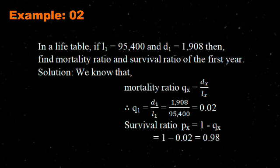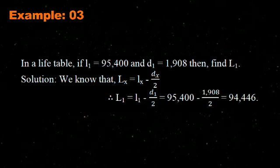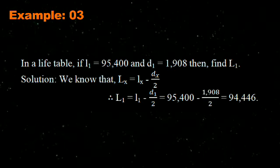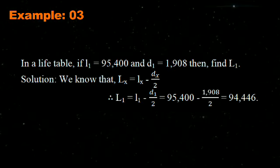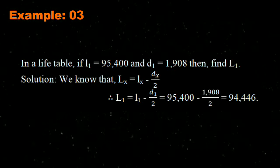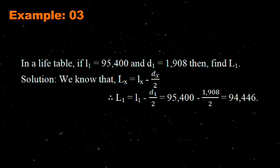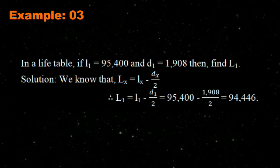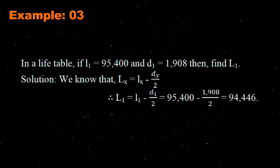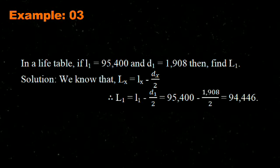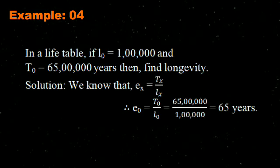Example 3: In a life table, if l1 = 95,400 and D1 = 1,908, find capital L1. Using the formula: L1 = l1 − D1 ÷ 2 = 95,400 − (1,908 ÷ 2) = 95,400 − 954 = 94,446.